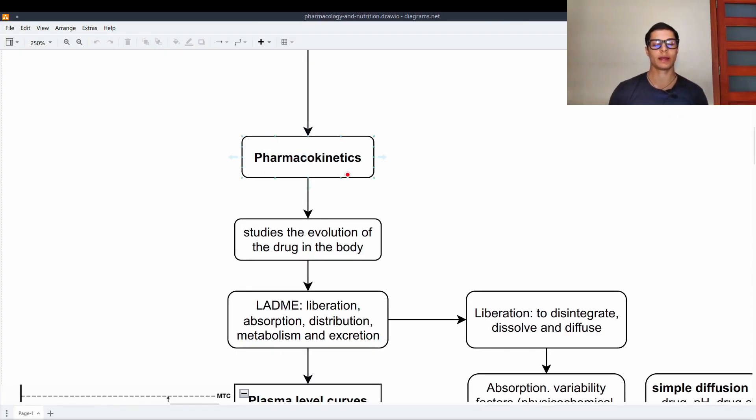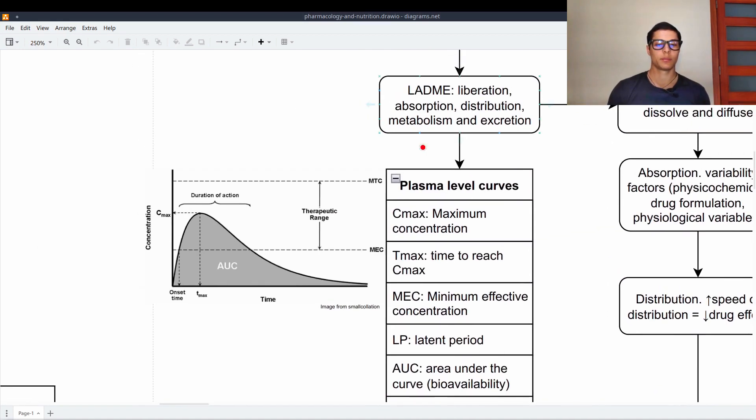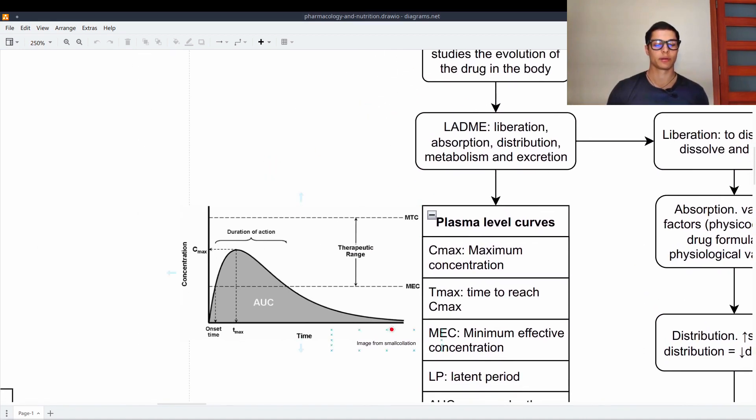Now, let's take a look at pharmacokinetics. Pharmacokinetics are the study of the evolution of the drug in the body. Basically, we have five stages here, which are grouped in this acronym LADME, which stands for Liberation, Absorption, Distribution, Metabolism and Excretion. And because of this, we have graphics. Plasma level curves.